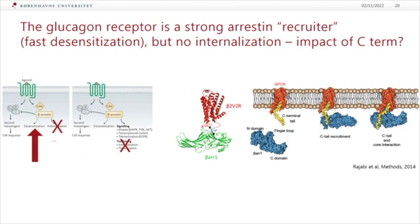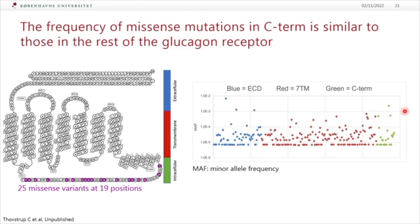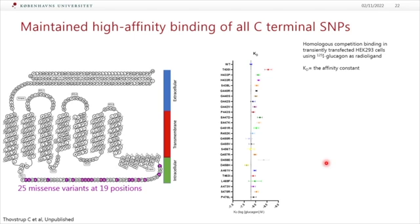The glucagon receptor has strong arrestin recruitment, meaning it has a possibility for fast desensitization — a fast signal and a fast stop of the signal. Arrestin mainly interacts with the C-terminus of the receptor as the first interaction point. We went back to our variants and had another master student look at the C-terminal variants — 25 missing variants in 19 positions. Their frequency in the C-terminus is the same as in the rest of the glucagon receptor. In terms of binding, they all bind glucagon quite well because they are positioned far away from the binding site — as expected.